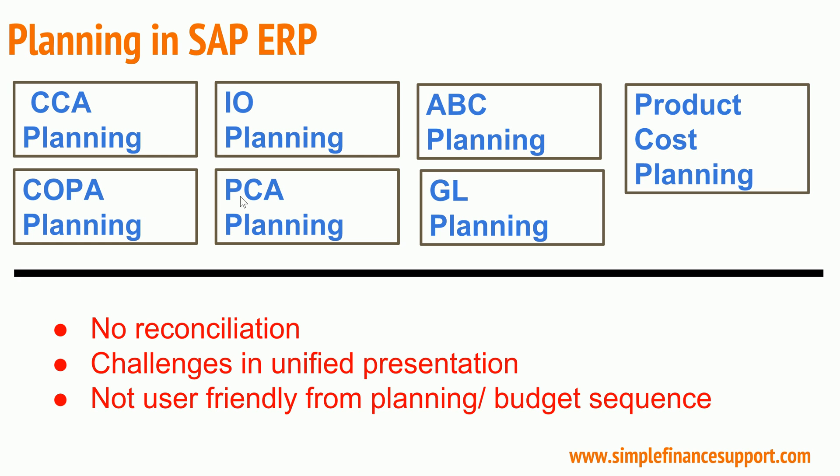This reconciliation issue was a major challenge in the ERP planning area. There was no unified presentation of data from the planning perspective. Also, organizations have a structured sequential approach during the year to come up with planned values, reconcile them overall, and get approval from top-level management — so those sequential budgeting functions were also missing.